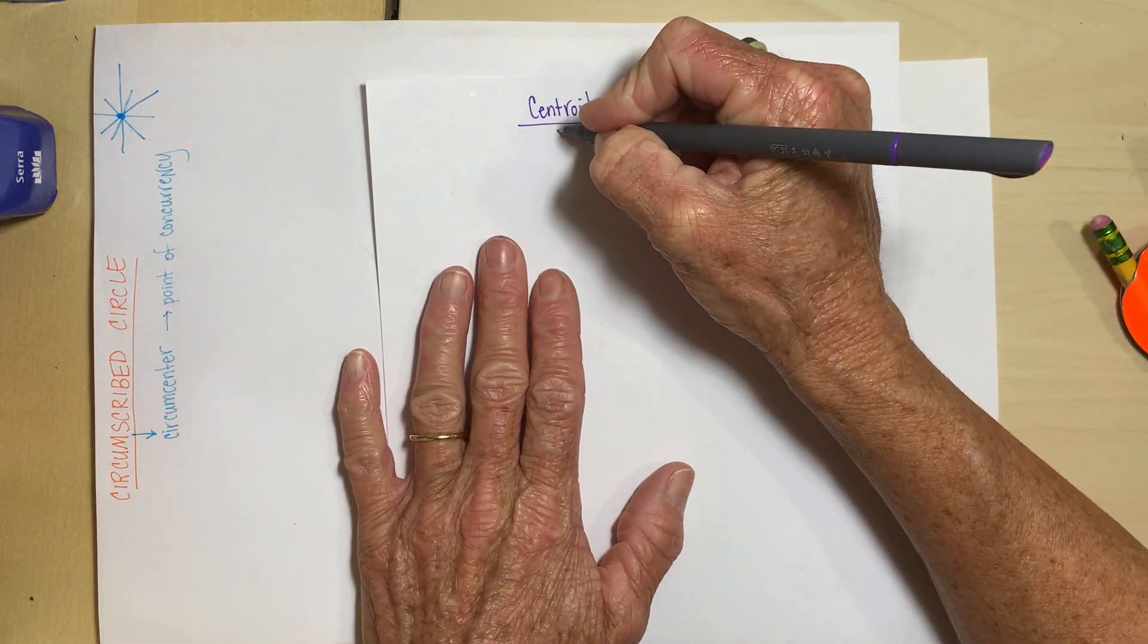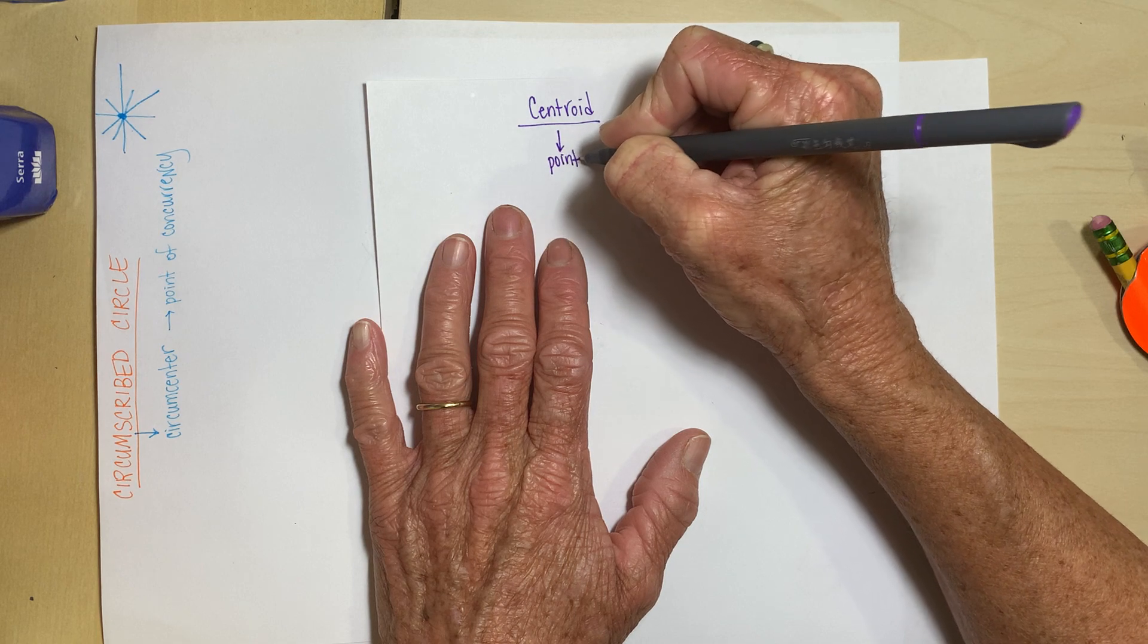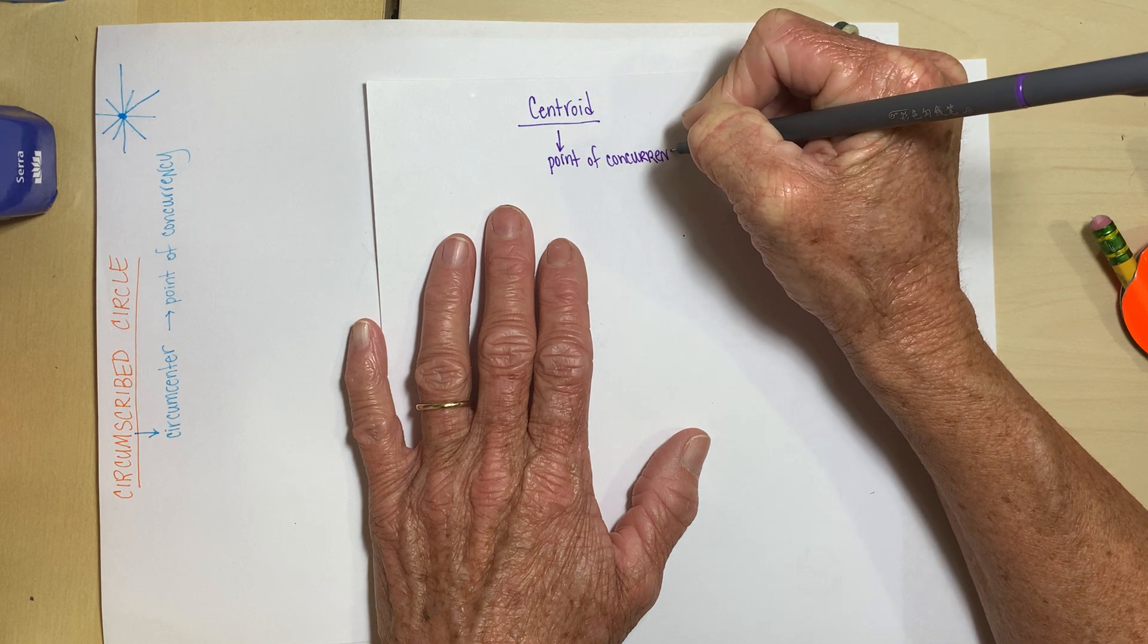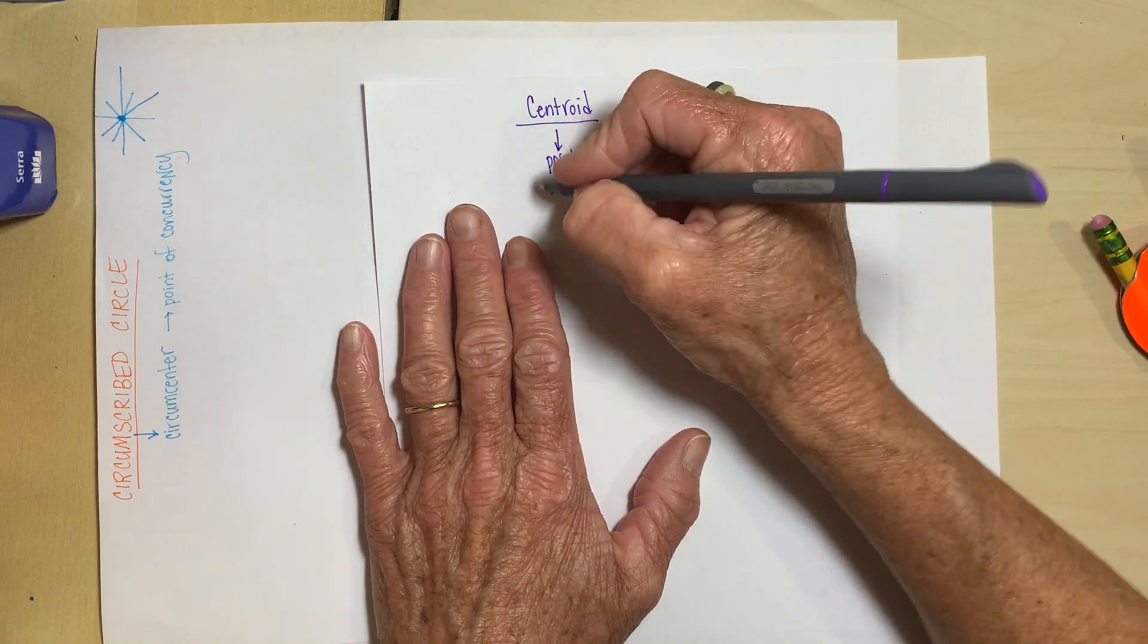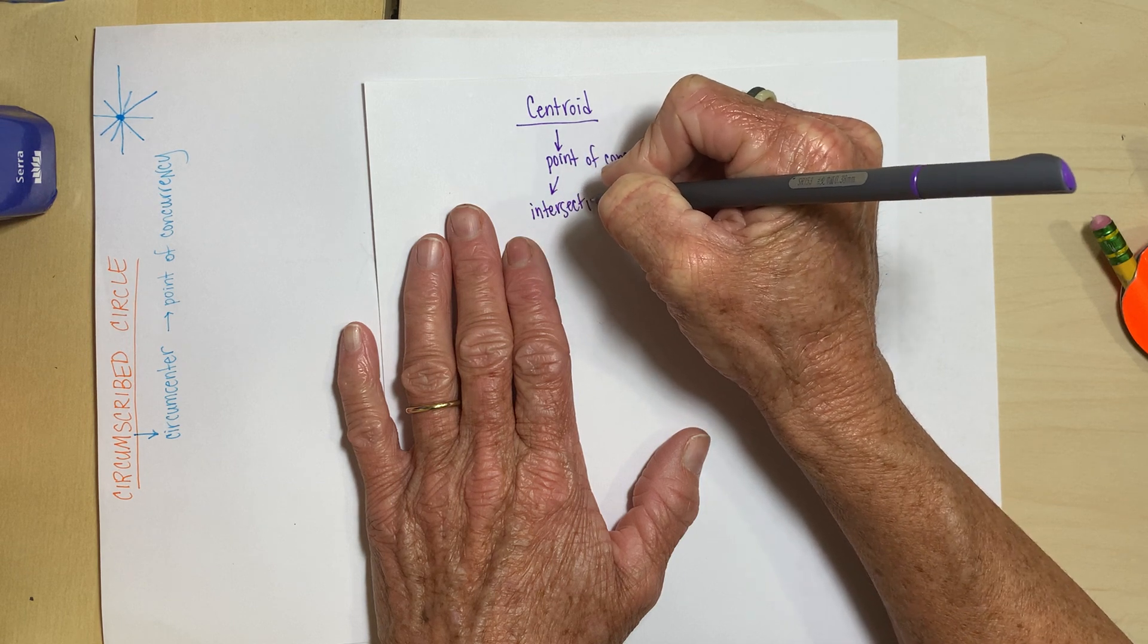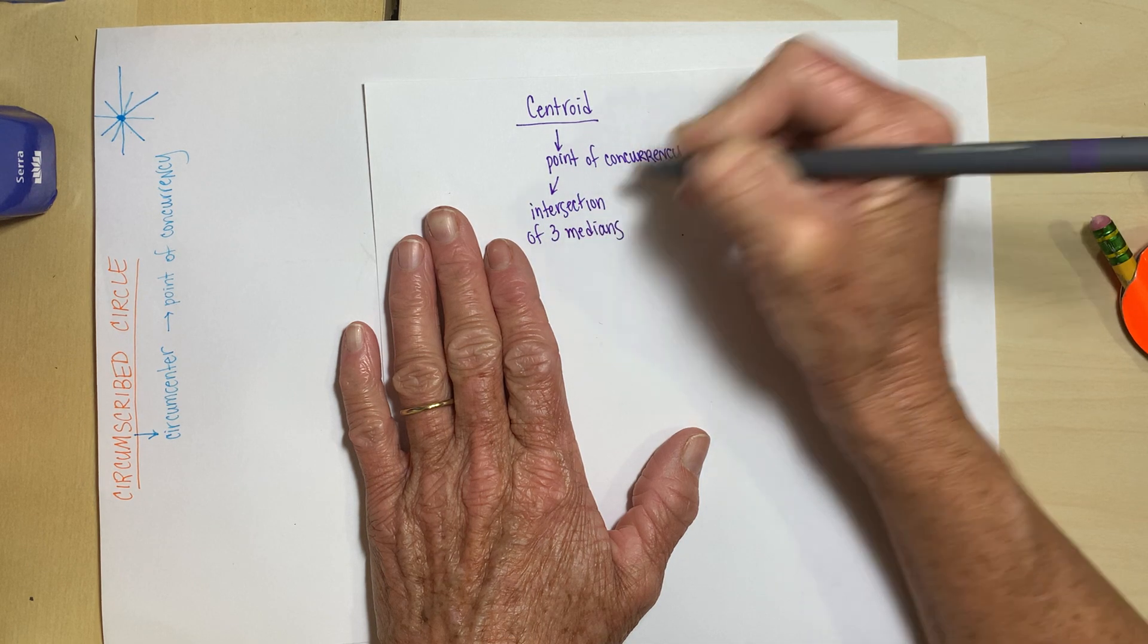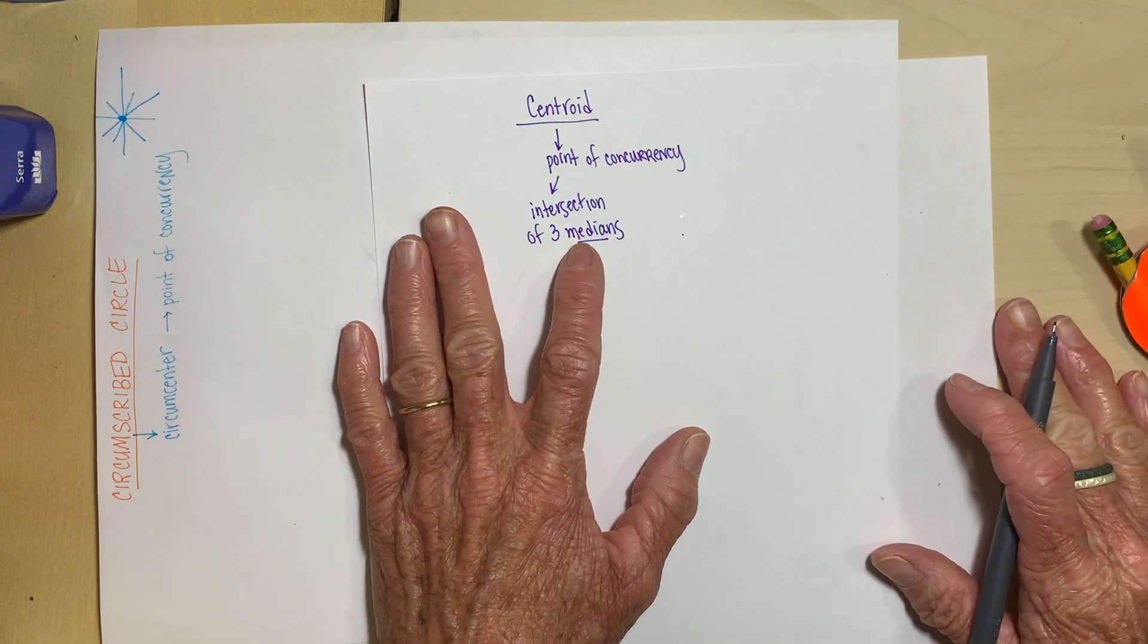So the centroid is a point of concurrency, but this one has nothing to do with a circle. In fact, these all really have more to do with triangles than they do circles. It's a point of concurrency inside a triangle. It is the intersection of the three medians in a triangle. So that's a new word for us. So let's talk about what a median is.